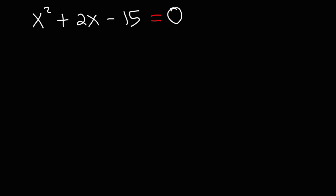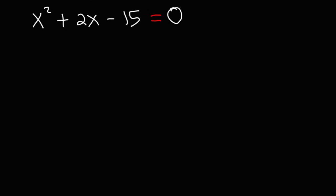In this video, we're going to talk about how to solve a quadratic equation by completing the square. The first thing we need to do is take the constant term negative 15 and move it from the left side to the right side of the equation. In order to do so, the sign is going to change from negative 15 to positive 15, and we're going to have x squared plus 2x is equal to positive 15.